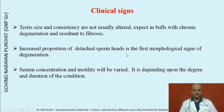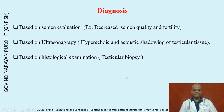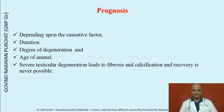Increased proportion of detached sperm is the first morphological sign of degeneration. Semen concentration and motility will vary depending upon the degree and duration of the condition. Diagnosis is based on semen evaluation showing decreased semen quality and fertility, ultrasonography showing hyperechoic areas and acoustic shadowing of testicular tissue, and histological examination by testicular biopsy.